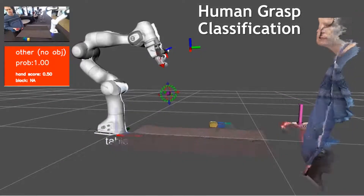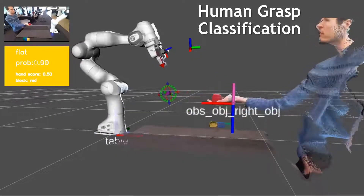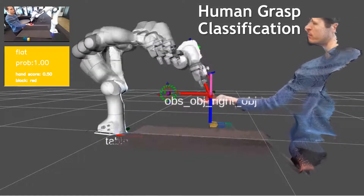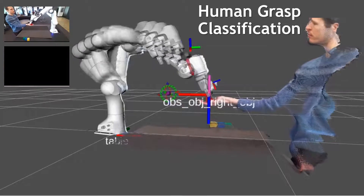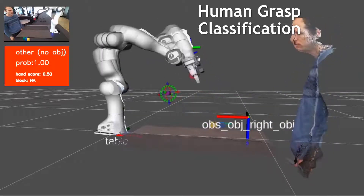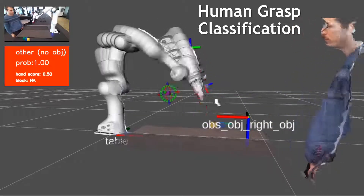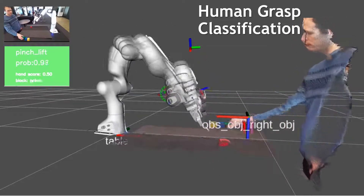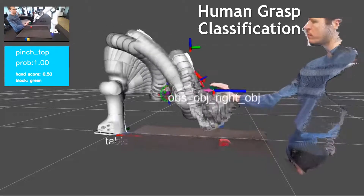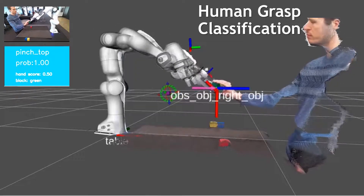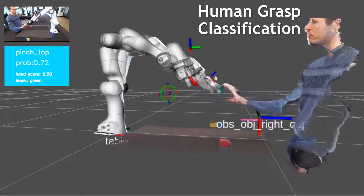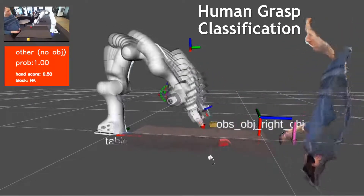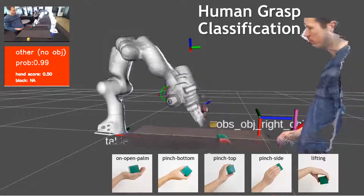In this paper, instead of estimating hand and object pose, we propose to formulate the human grasp recognition problem as a classification task. Specifically, we discretize the ways of holding a small object into five categories,